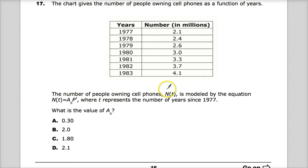The number of people owning cell phones N(t) is modeled by this equation, so I'm just going to write it up here just so I can discuss it a little bit. N(t) = A₀ × P^t, where t represents the number of years since 1977. They want to know the value of A₀.